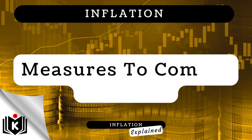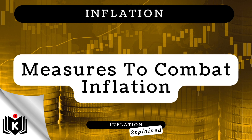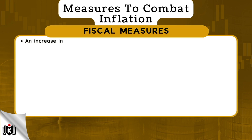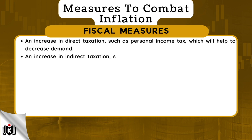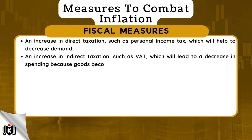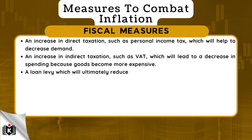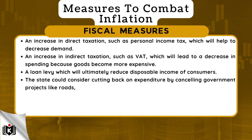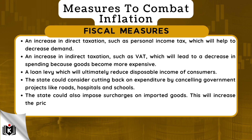There are a number of measures that the government and policy makers can use to fight inflation when it gets too high. In this next section, we highlight three types of policy measures to combat inflation. Let's start with fiscal measures. These are specific measures taken by the government, and particularly the Minister of Finance, regarding taxation and expenditure. These measures can include: an increase in direct taxation such as personal income tax, which will help to decrease demand; an increase in indirect taxation such as VAT, which will lead to a decrease in spending because goods become more expensive; a loan levy, which will ultimately reduce the disposable income of consumers. The state could also consider cutting back on expenditure by cancelling government projects like roads, hospitals, and schools. The state could also impose surcharges on imported goods, which will increase the price of these imported goods, resulting in many people being unable to afford to buy them.